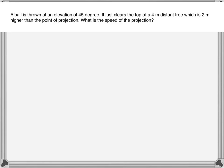The problem says that a ball is thrown at an elevation of 45 degrees and it just clears the top of a four meter distant tree which is two meters higher than the point of projection. So the ball is thrown somewhere from here and there is a tree here which is four meters away and the tree top is two meters higher than the point of projection and the ball just clears the top. So we need to